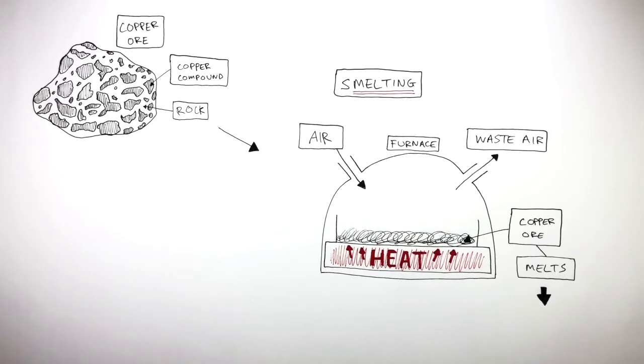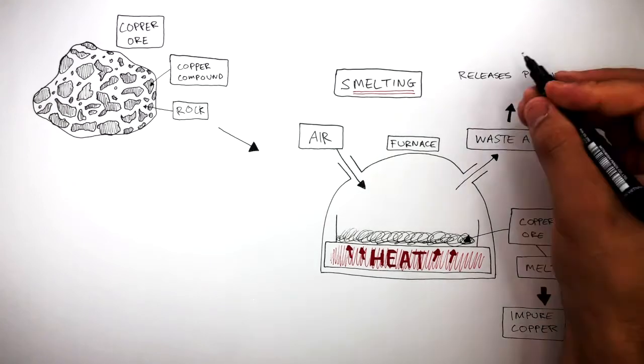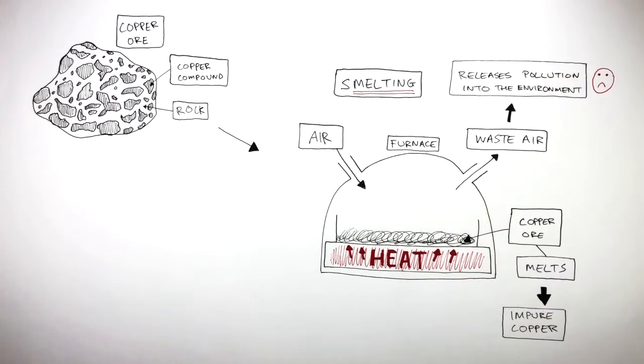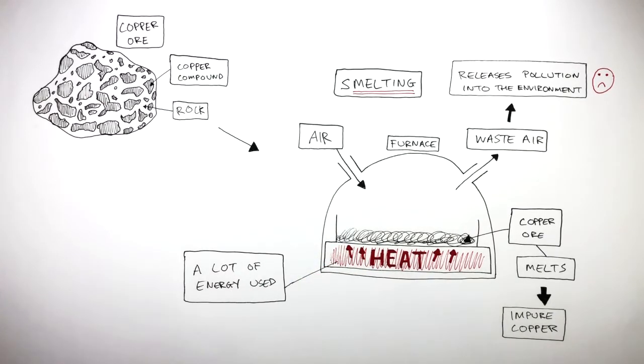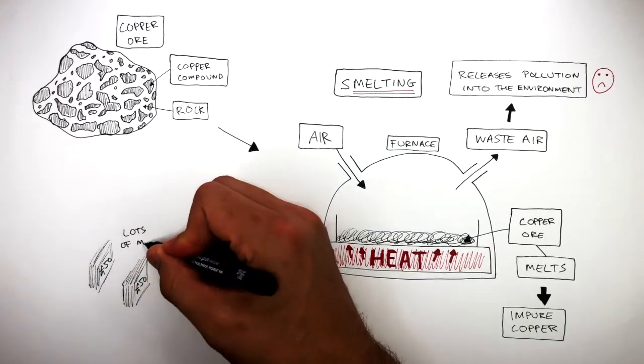The melting of this copper ore produces impure copper, which is a mixture of melted copper compounds, melted rock, and other substances. The waste air releases pollution into the environment, and this is a negative effect of smelting. Not only this, but a lot of energy is used to melt the copper ore, and this costs lots of money.